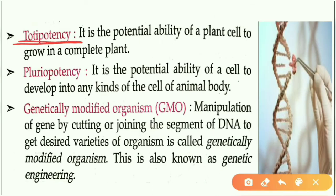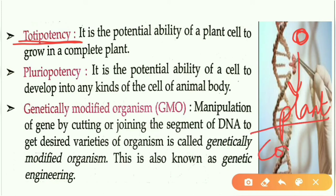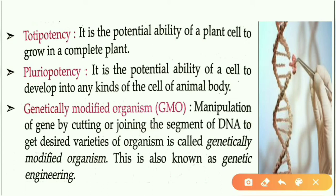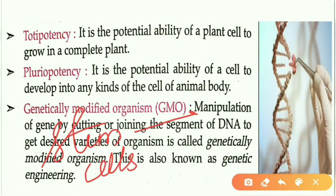Totipotency means a single cell of a plant is able to produce the whole plant — the complete plant can be produced from one single cell. Coming to pluripotency: it is the ability of a cell to develop into any kind of cell of the body. For example, stem cells can be transformed into any cell of the body.